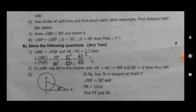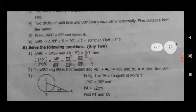Sixth, triangle SRP similar to triangle DEF, angle S is equal to 70 degrees, angle E is equal to 90 degrees, then find angle P.